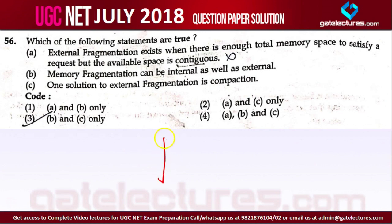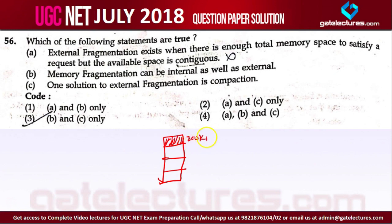For example, let us say this is your main memory. This area is already occupied and this is 300 KB. This is 100 KB which is unoccupied, which means this is free. This is again occupied which is 150 KB, and this is 50 KB which is unoccupied.